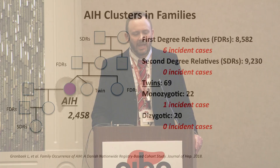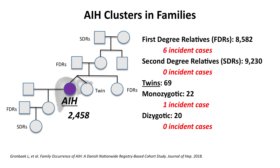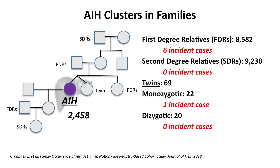The big thing about genes is this must pertain to your family, and the next question I get is: what is my risk for my daughter, my son, my mom? This is the largest family study and probably the most important in understanding this risk — a Danish study that looked at 2,500 AIH patients. They looked at first-degree relatives — over 8,000 of them — including brothers, sisters, parents, and kids. They also looked at second-degree relatives: cousins, aunts, and uncles. They also looked at twins — monozygotic twins from the same embryo and dizygotic twins from different embryos. They had tremendous numbers and had a chance to look over 10 years.